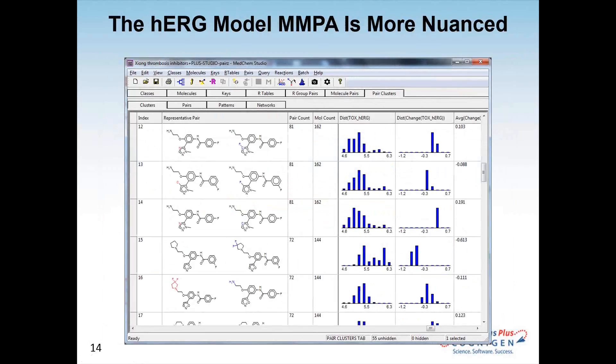Now, the HERG model is more nuanced in this respect because it's not something that's spread evenly. The effects of a structural change are not spread evenly over the whole molecule, so it tends to be more sensitive to context. You see that you get a broader range of effects. For example, going from a difluoro piperazine to just the unsubstituted piperazine, you get quite a wide range of effects depending on exactly what else is in the core, in the scaffold.